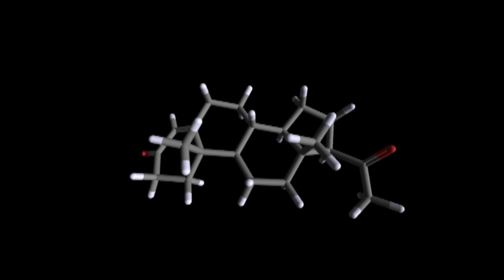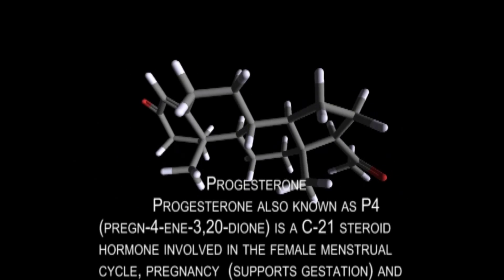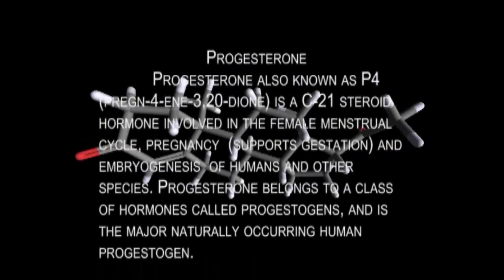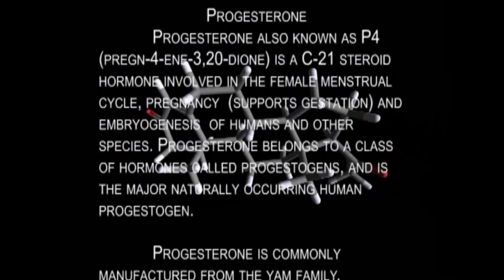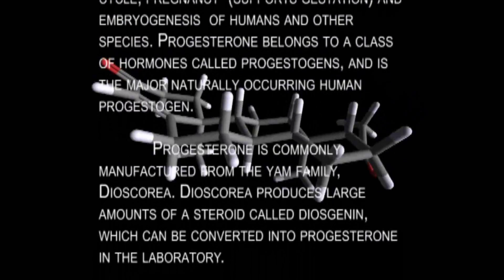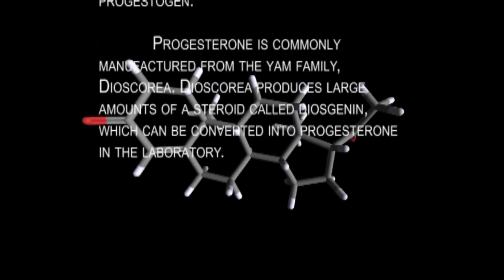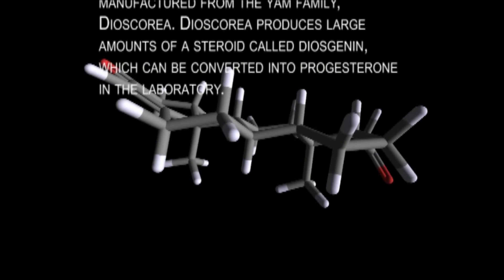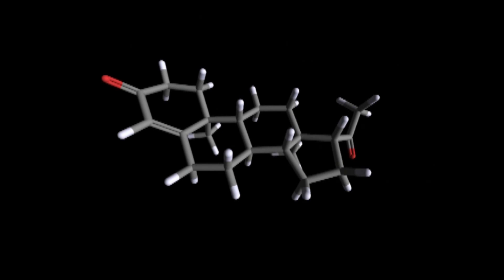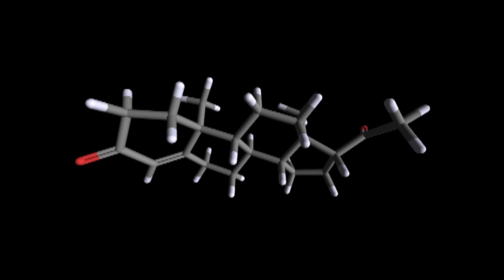Progesterone, also known as P4, is a C21 steroid hormone involved in the female menstrual cycle, pregnancy, supporting gestation, and embryogenesis of humans and other species. Progesterone belongs to a class of hormones called progestogens and is the major naturally occurring human progestogen. It is commonly manufactured from the yam family Dioscorea. Dioscorea produces large amounts of a steroid called diosgenin, which can be converted into progesterone in the laboratory.